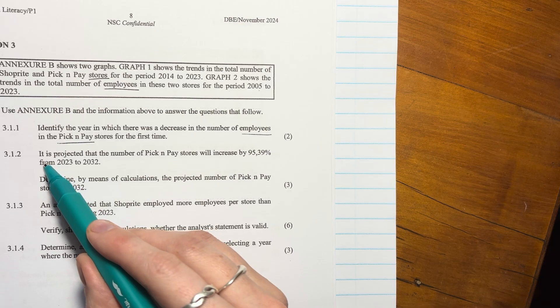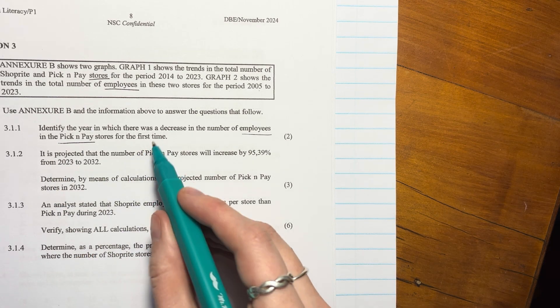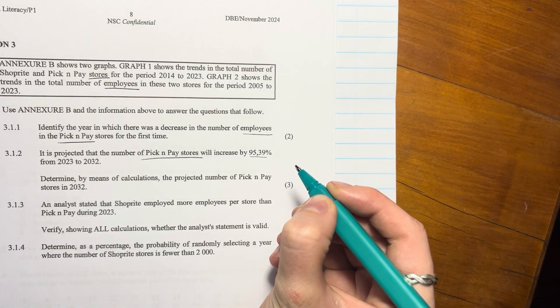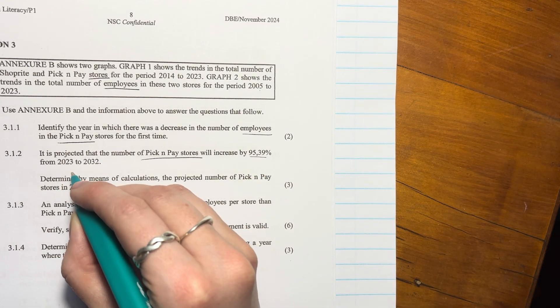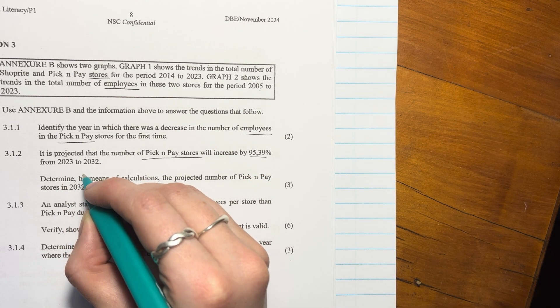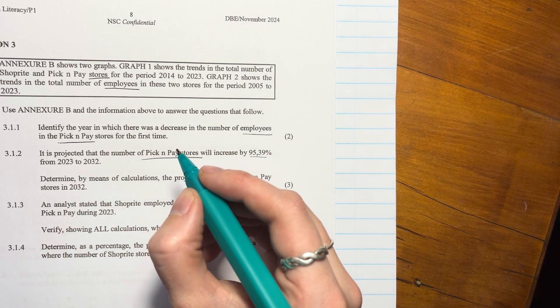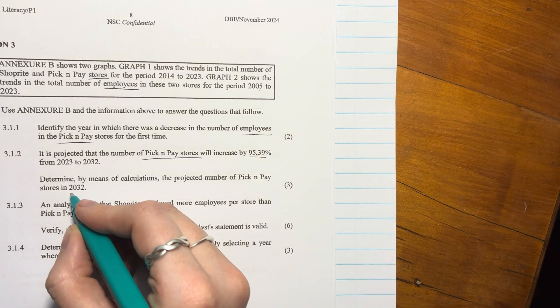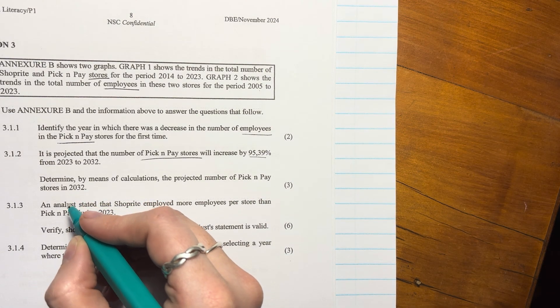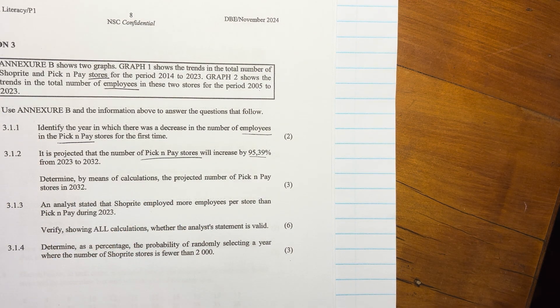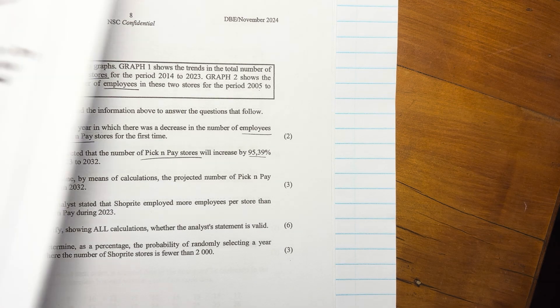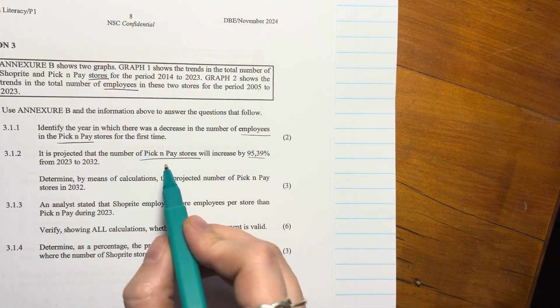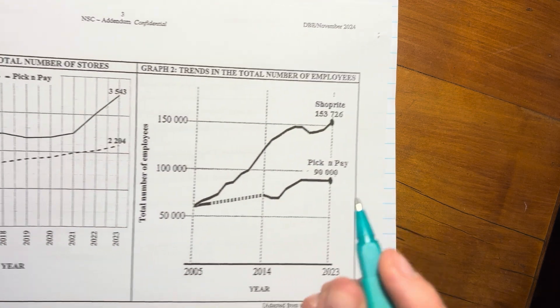Then for 3.1.2, it says it is projected that the number of Pick n Pay stores will increase by 95.39% from 2023 to 2032. So over that period, determined by means of calculation, the projected number of Pick n Pay stores in 2032. Okay, so the number of stores in Pick n Pay in 2023 is 90,000. Oh, that's not, that's the number of employees, sorry.